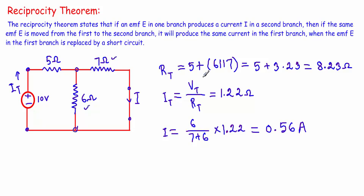With respect to these two terminals, the 7 ohm and 6 ohm resistances are connected in parallel, and their equivalent parallel resistance will be in series with the 5 ohm. So RT equals 5 plus the parallel combination of 6 and 7, which equals 5 plus 3.23 ohm, giving us RT equal to 8.23 ohm. The total current IT equals 10 volts divided by 8.23 ohm, giving a total current of 1.22 ampere.